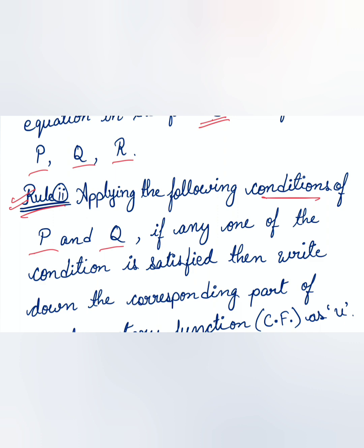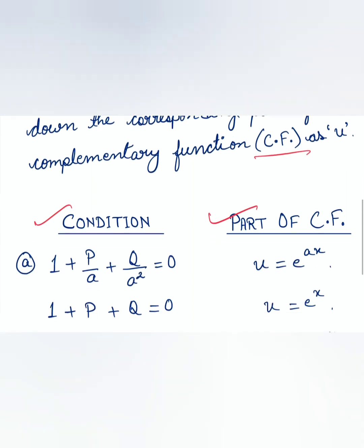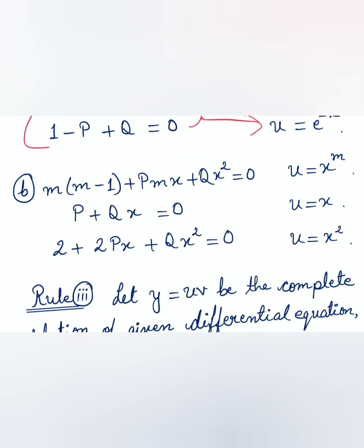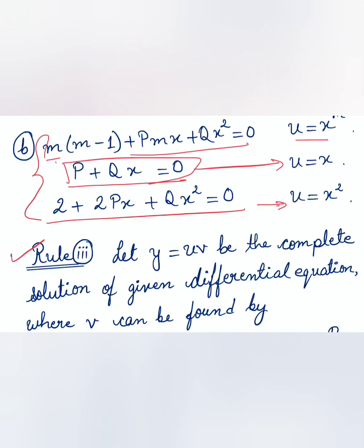Rule 2: We have conditions for p and q. If 1 + p/a + q/a² = 0, the complementary function part is e^(ax). If 1 + p + q = 0, then u = e^x. If 1 − p + q = 0, then u = e^(−x). For condition m(m−1) + pmx + qx² = 0, u = x^n; if p + qx = 0, u = x; and if 2 + 2px + qx² = 0, then u = x².